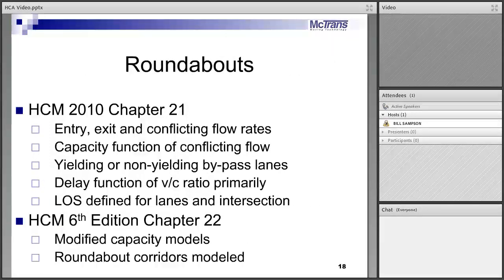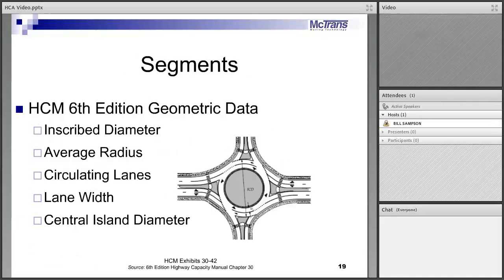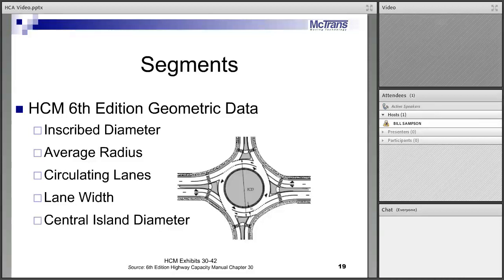Roundabouts were first modeled in the 2010 manual — single-lane and two-lane roundabouts, single-lane and two-lane approaches, yielding and non-yielding bypass lanes — to get delay and level of service, which we could not do before 2010. Those capacity models changed dramatically in the 6th edition: capacity went up by about 30 percent. The ability to model segments between roundabouts along a corridor was also added. For those segments, this is the first time we've looked at geometric delay, which requires a bit more geometric data. Geometric delay is illustrated by contrast with a signal: at 2 AM, a green light means zero delay, but at a roundabout you still must slow to 15 mph, navigate the circle, and speed back up — that's geometric delay.